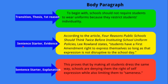The second sentence should have a sentence starter — we have a bunch of these on the board as well as in some of your Google Docs. 'According to the article' is what I chose to use. Then I have the name of the article: 'Four Reasons Public Schools Should Think Twice Before Instituting School Uniform Policies.' Then here's my evidence — the author, Lee Rowland, states: 'Students have a First Amendment right to express themselves so long as that expression is not disruptive during the school day.' That's my evidence — sentence starter, then the quote.